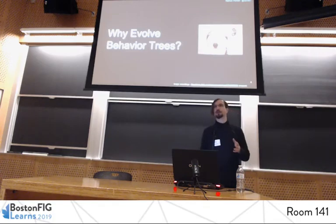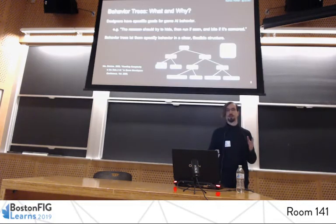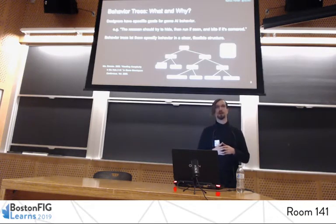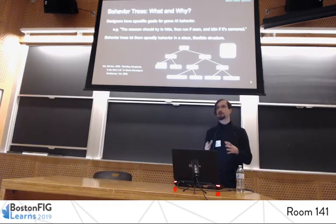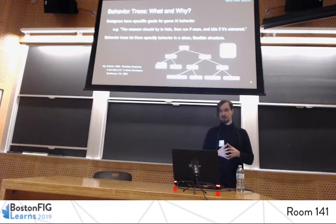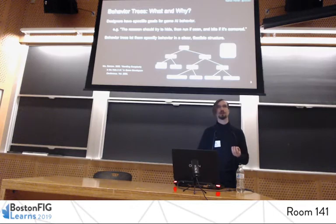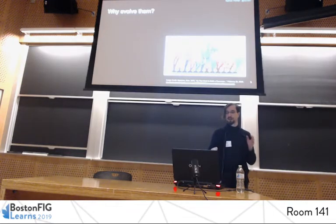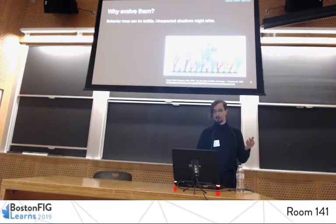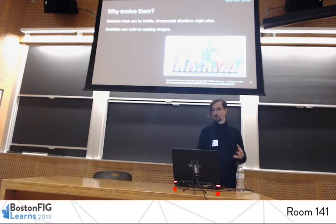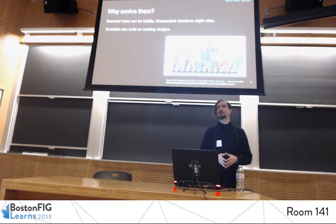Behavior trees trace back to at least Damian Isla's work on the Halo 2 AI system in 2005, though they've been expanded on significantly since then. They've become a common technique for agent AI in the games industry, because they allow designers to clearly and explicitly specify the behavior they want in very specific situations — building a hierarchy for decision-making that's human-readable and in a very visual format, easily understandable for people who are not programmers. However, behavior trees are only as flexible and robust as the situations their designer thinks to include.